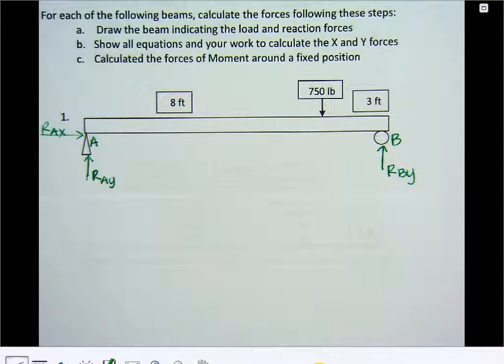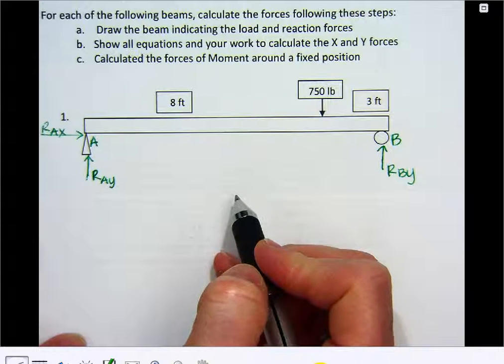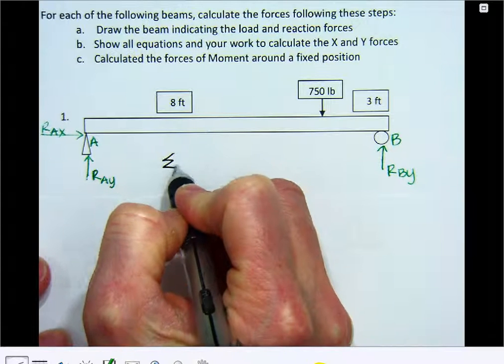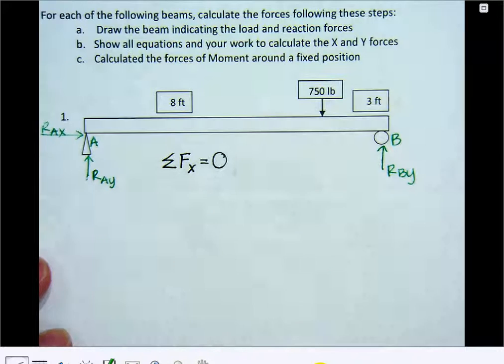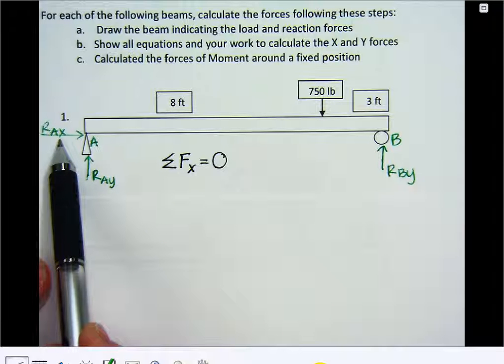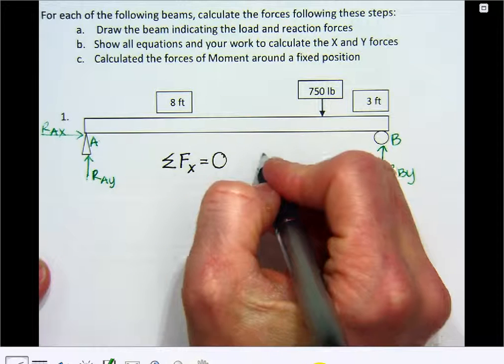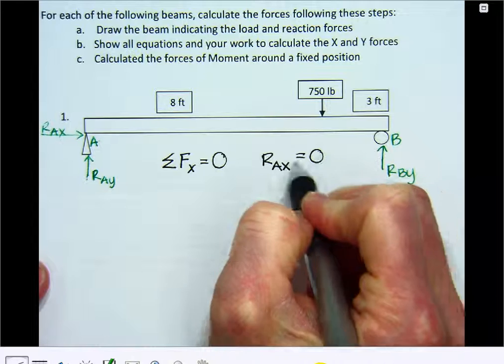Now, to find the forces acting on this beam, we need to do a three-step process. So if it's static, in a fixed position, then it's not moving. So that would mean, step one, where I'm going to do the sum of the forces in the x direction have to equal zero. So I'm going to look at my picture and find every single vector that's moving to the left and to the right. And so this is the only one, and it's moving to the right. So I have RAx, and it's the only one, so it has to be zero. Easy enough.